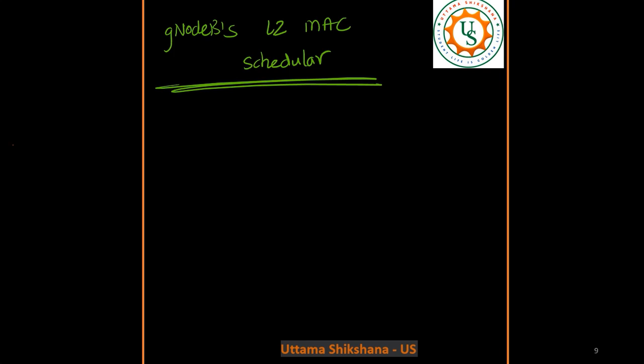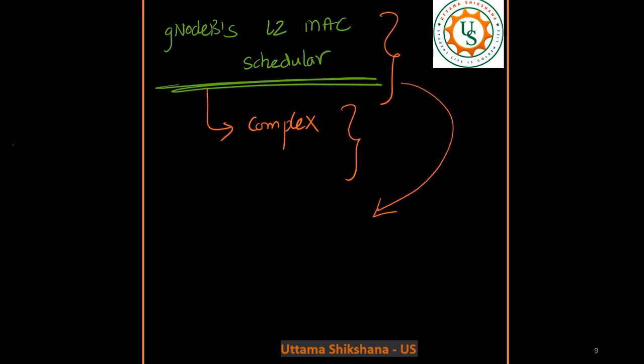But what is the problem? It will make the scheduler design very complex — it will burden the scheduler because the scheduler has to address all these UEs, allocate resources for further processing, and schedule MSG2 and MSG3 for all these UEs. So it will burden the scheduler and moreover it will also increase the signal processing at the L2 layer.